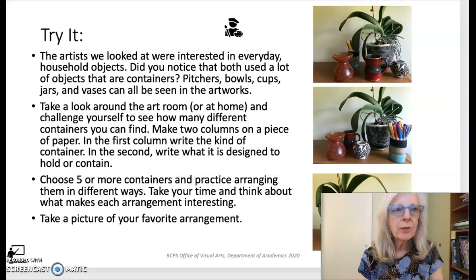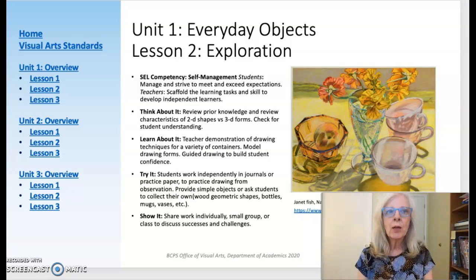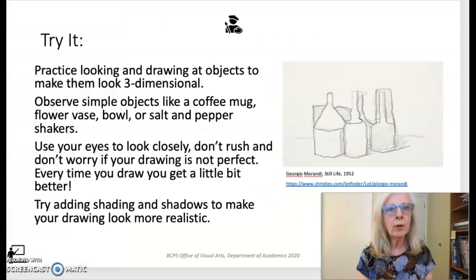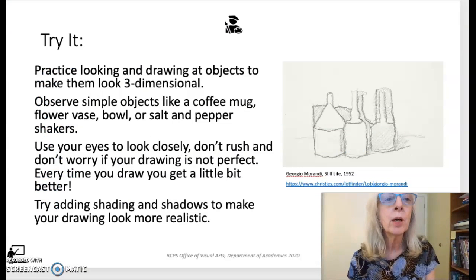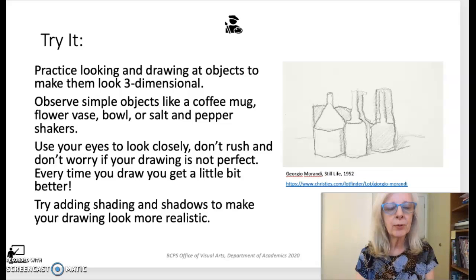The final lesson in this unit asks students to select and arrange several objects for a still life composition. There are three suggested options for drawing using contour lines. Teachers are encouraged to select options or modify in the try it section to best fit the needs of your students.